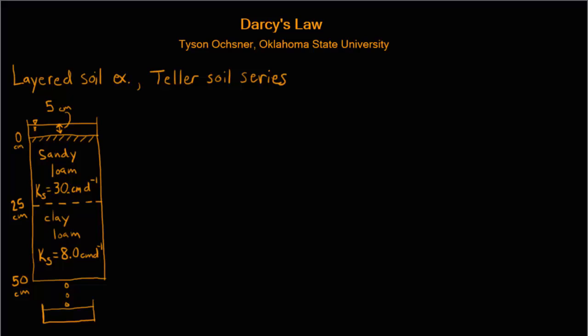So in this case we use an example of a real soil series called the Teller series. In that series you might find for the A horizon a sandy loam with a saturated hydraulic conductivity of around 30 centimeters per day for the top 25 centimeters, and then for about 25 centimeters below that you may find a BT horizon consisting of a clay loam with a saturated hydraulic conductivity of about 8 centimeters per day.